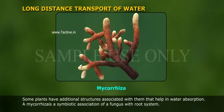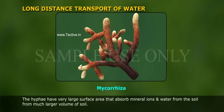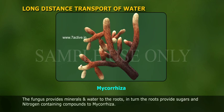A mycorrhizae is a symbiotic association of a fungus with a root system. The fungal filaments form a network around young roots or penetrate root cells. The hyphae have a very large surface area that absorbs mineral ions and water from the soil from a much larger volume of soil.